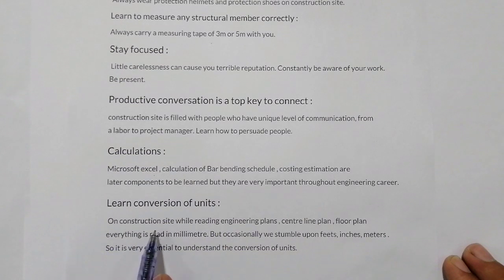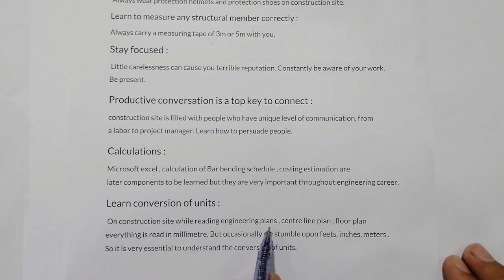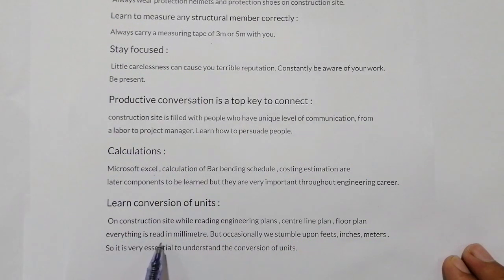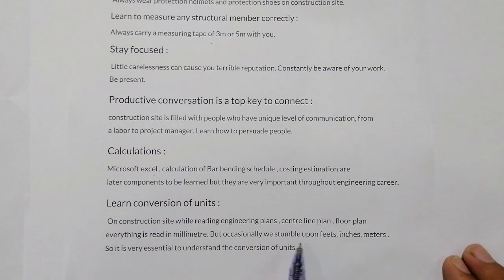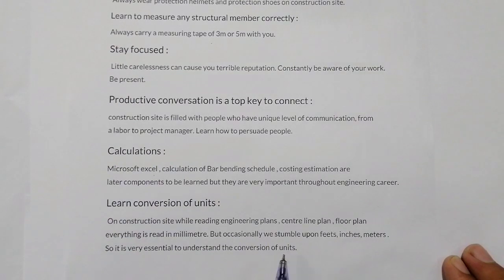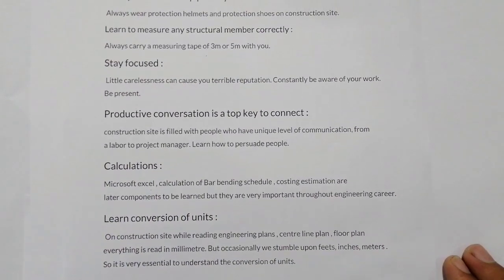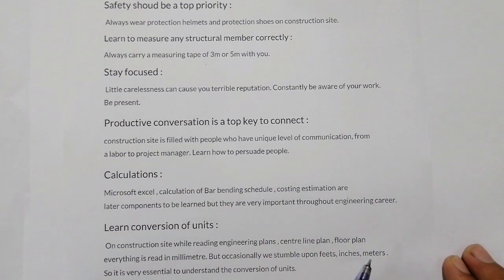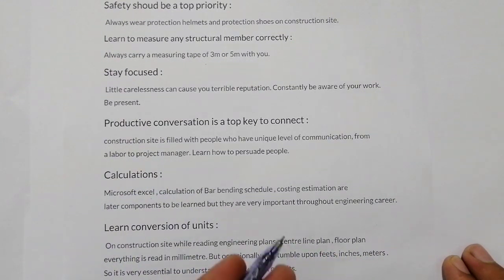The last concept is to learn conversion of units. On a construction site, while reading engineering plans — central line plan, floor plan — everything is read in millimeters, but occasionally we also encounter feet, inches, and meters. So it is very essential to understand the conversion of units, and every civil engineer should know about unit conversions.